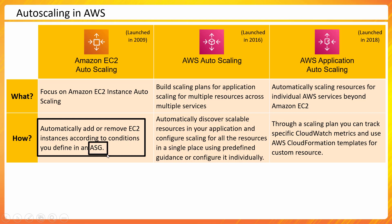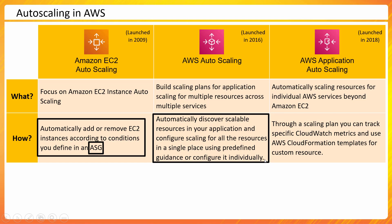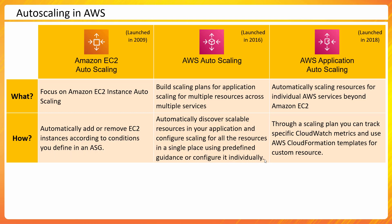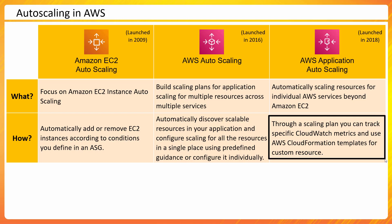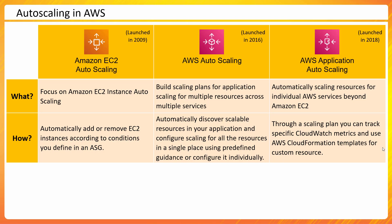In terms of how each works: Amazon EC2 Auto Scaling adds and removes instances based on conditions defined in your auto scaling group. AWS Auto Scaling automatically discovers scalable resources in your application and configures scaling for all resources in a single place using predefined guidance — you can optimize for cost or for high availability. AWS Application Auto Scaling is implemented through scaling plans and allows you to use any CloudWatch metrics with CloudFormation to create custom resources for auto scaling.